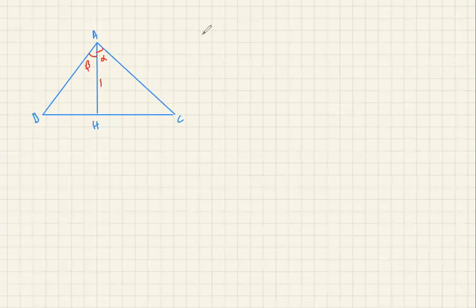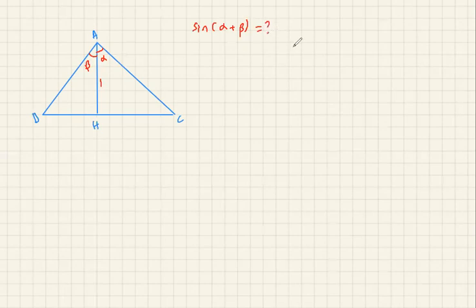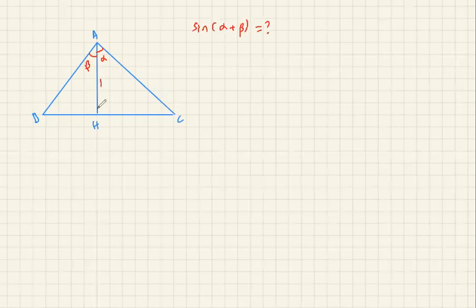My goal is to find the sine of alpha plus beta. To do so, I'll use this figure and find the area of triangle ABC in two different ways: I can find the area of the larger triangle all at once, or I can add the areas of the two smaller triangles. Since I said this is an altitude, let me label those smaller triangles as well.